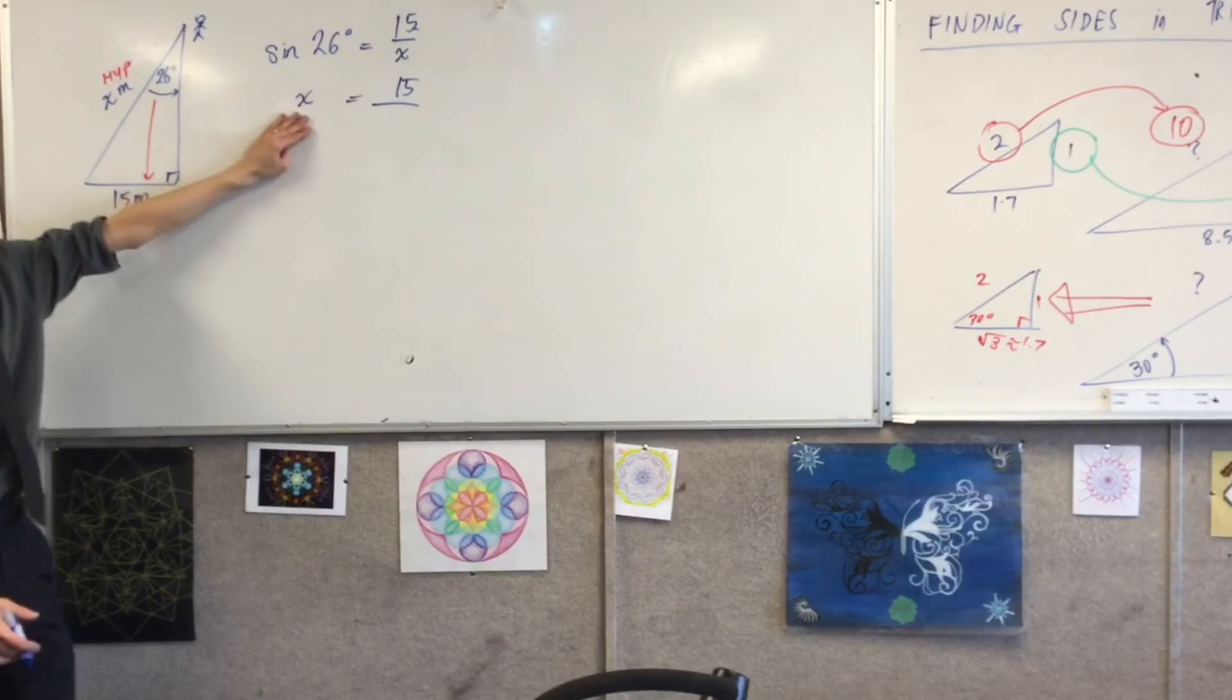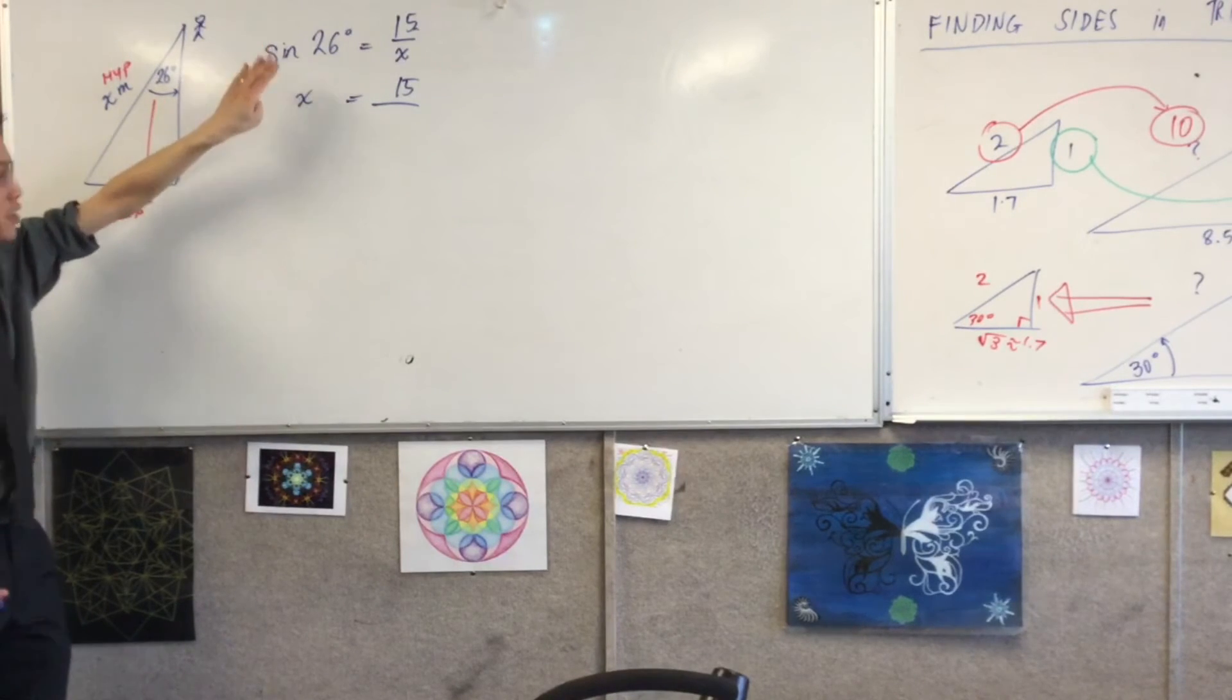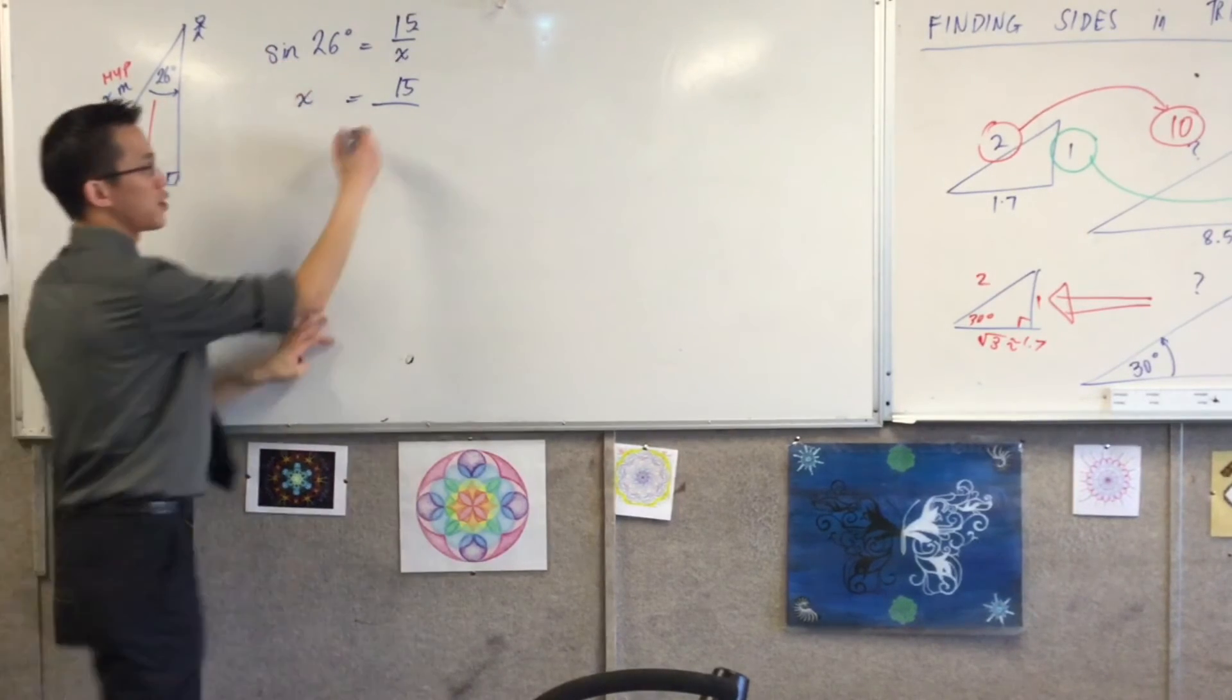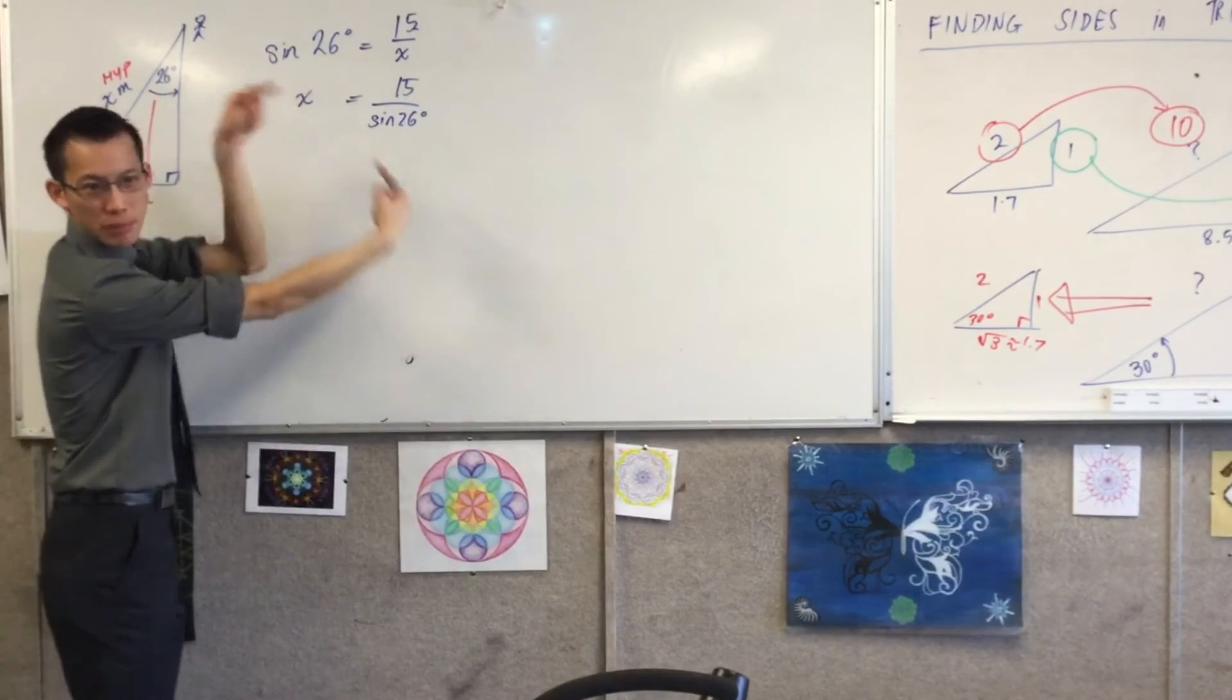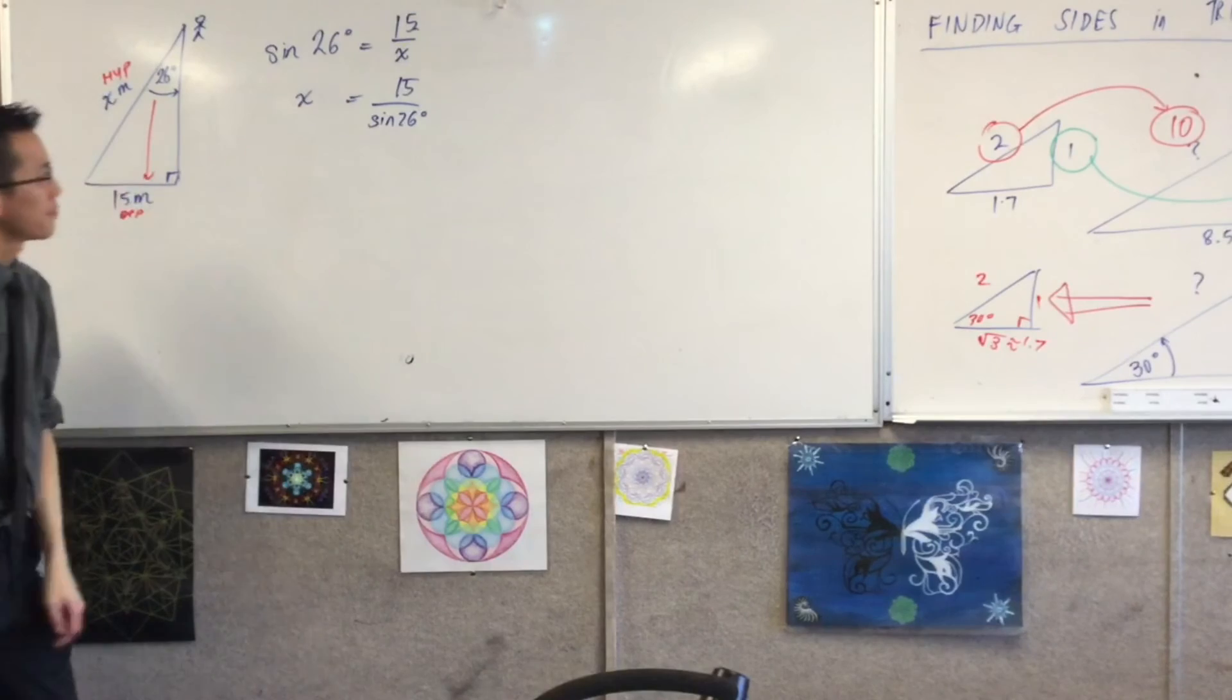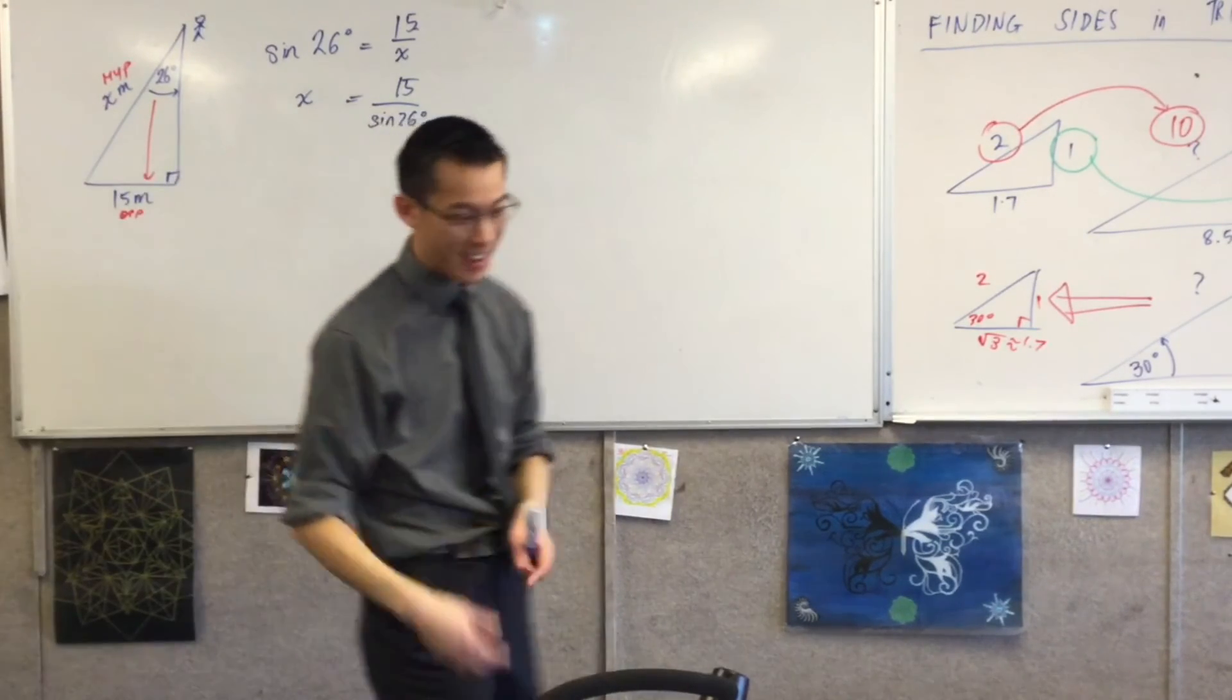But not only that, I want the x to be by itself. At the moment there's a sine 26 degrees over here on the left so how do I get rid of it? I should divide through, very good. So sine 26 is going to appear here, they're kind of like swap places if that makes sense, okay? Now I have no idea what sine 26 degrees is, thankfully I have a calculator that will help me.